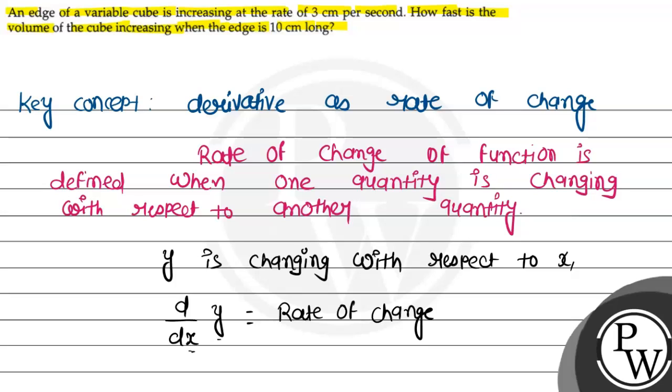This is the rate of change. To find the rate of change, we have to find the first derivative of the function. Let the edge of the cube be x cm.